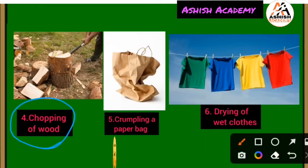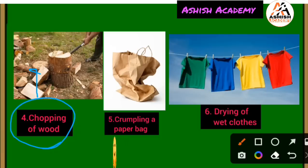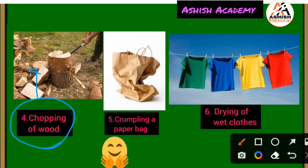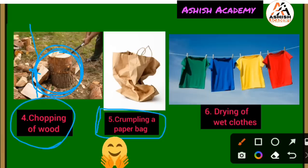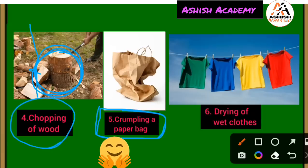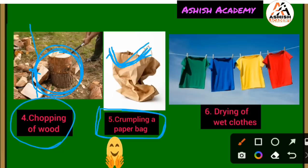Next example: chopping of wood — a piece of wood cut into small pieces. No new substance is formed. No matter how many small pieces you cut it into, no new substance is formed, so this is a physical change. Next: crumpling of a paper bag — crumple a paper bag, then release it and it returns to its original state. No new product is formed. This is a physical change.